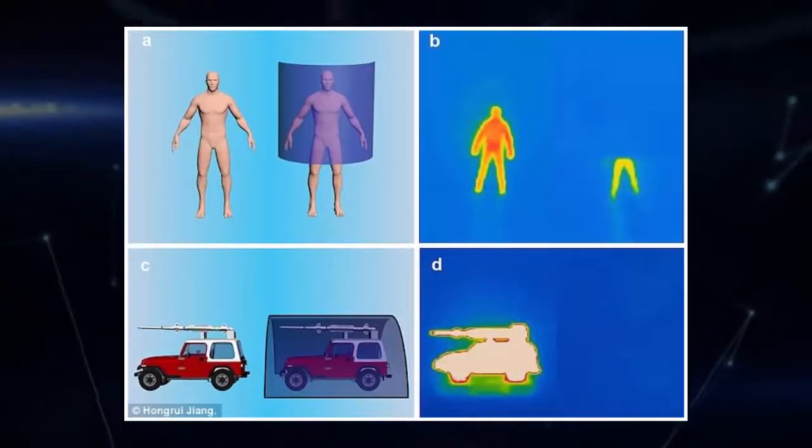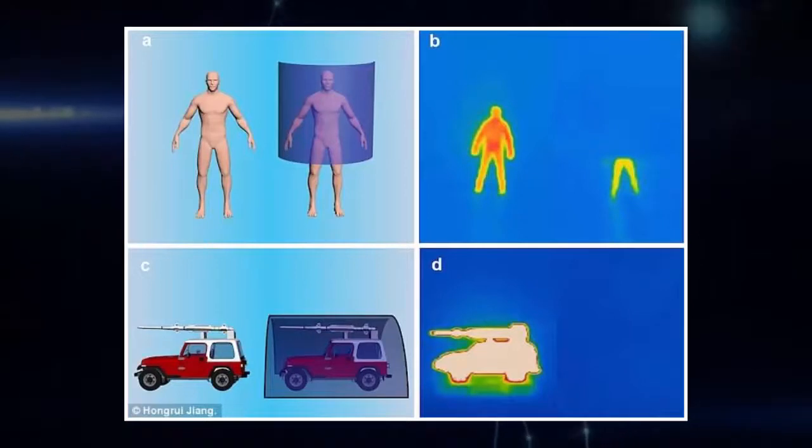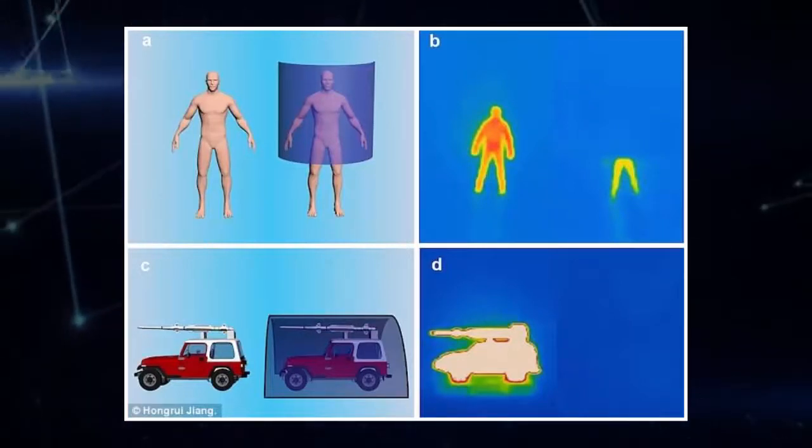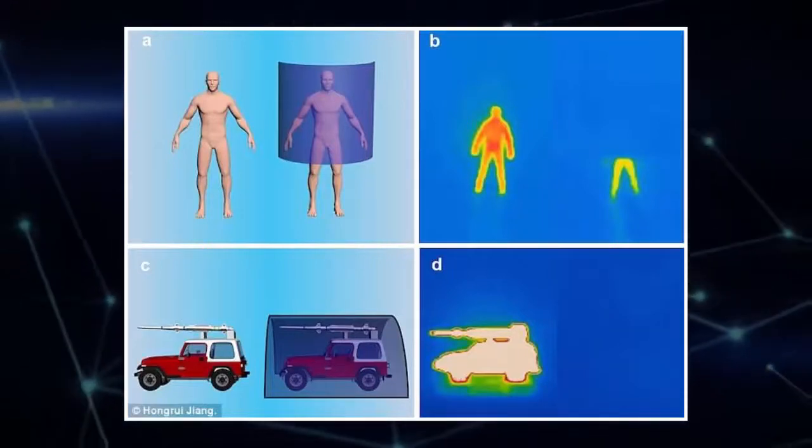Warm objects like the human body or a car's engine give off heat as infrared light, which is something that a drone can pick up on. Other technologies have been developed to obscure these heat sources, but can be cumbersome or expensive.